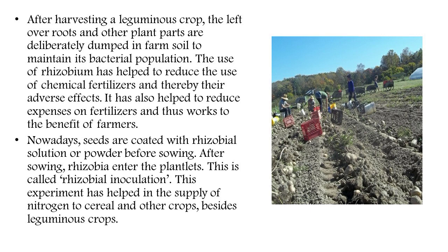Nowadays, seeds are coated with Rhizobium solution or powder before sowing. After sowing, Rhizobium enters the plantlet — this is called Rhizobium inoculation. When the plant is a seedling or plantlet, the powder-coated Rhizobium enters into it. This experiment has helped in the supply of nitrogen to cereals and other crops besides leguminous crops, making it useful not just for leguminous plants but for other crops to also create nitrogen and protein richness.